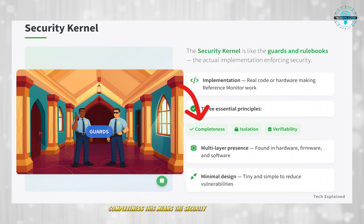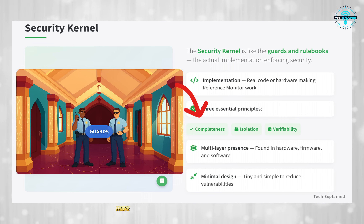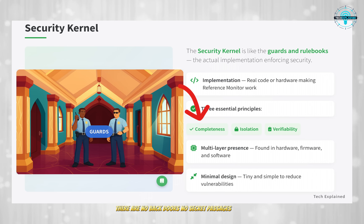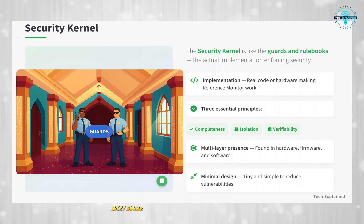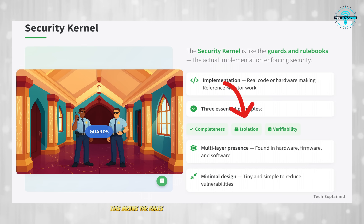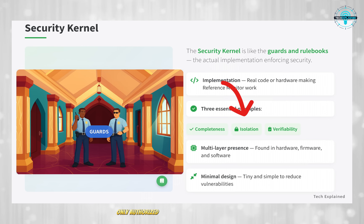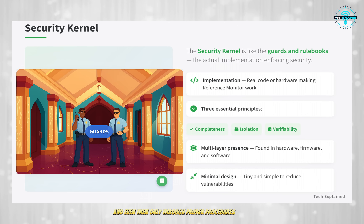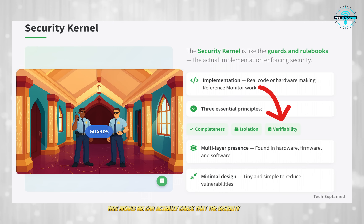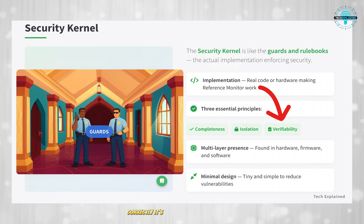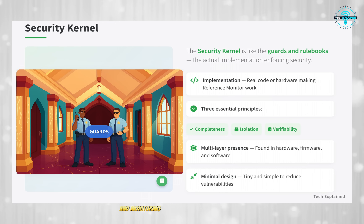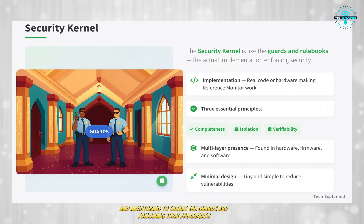Completeness: the security kernel can't be bypassed — there are no backdoors, no secret passages around it, and every single access request must go through it. Isolation: the rules the security kernel uses are tamper-proof; only authorized people can change the rules, and even then only through proper procedures. Verifiability: we can actually check that the security kernel is working correctly — it's like having audit logs and monitoring to ensure the guards are following their procedures properly.